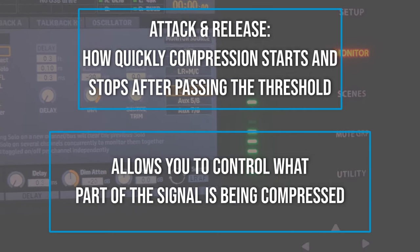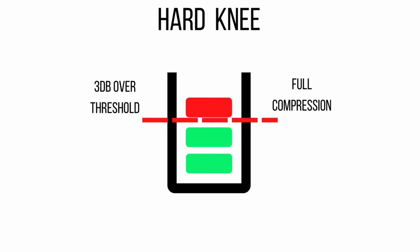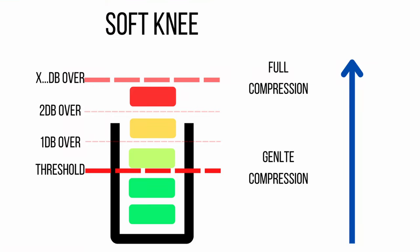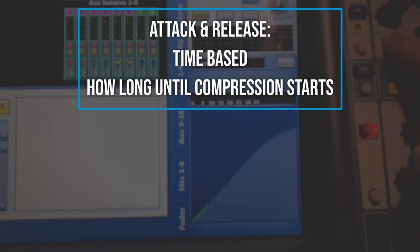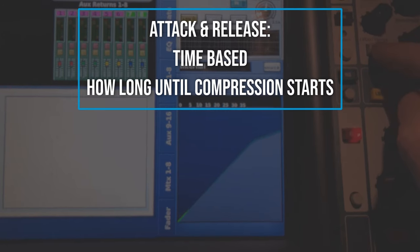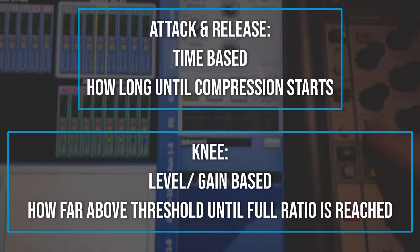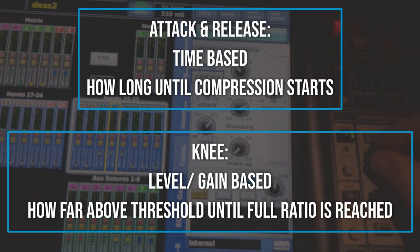Now let's talk about the knee setting on the compressor. The knee affects how quickly the compressor ramps up to full effect. If you have a hard knee, it means when you cross the threshold, you are immediately into full compression. If you have a soft knee, then as you cross the threshold, the compression gently ramps up to the full ratio — the ratio increases smoothly as the gain goes above the threshold. Attack is time-based: once you cross the threshold, it's only a matter of time before the compression is enabled. Knee is level-based: the further above the threshold you go, the more compression you enter.